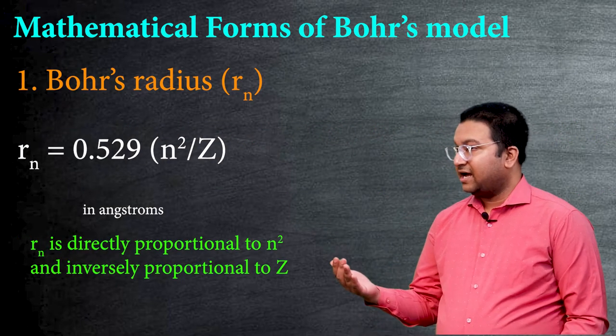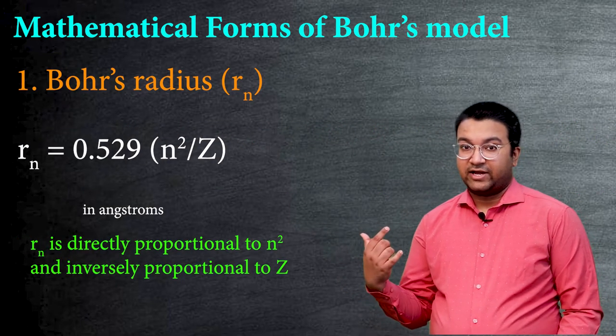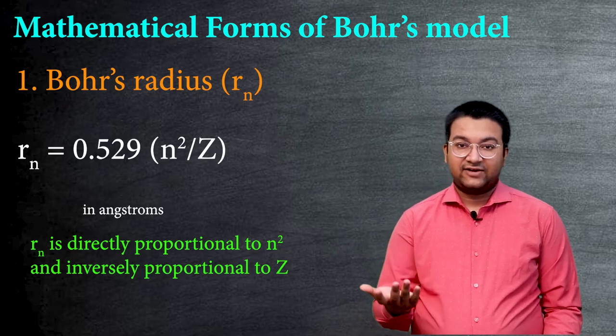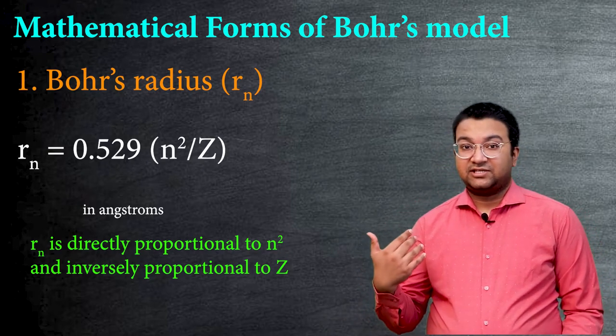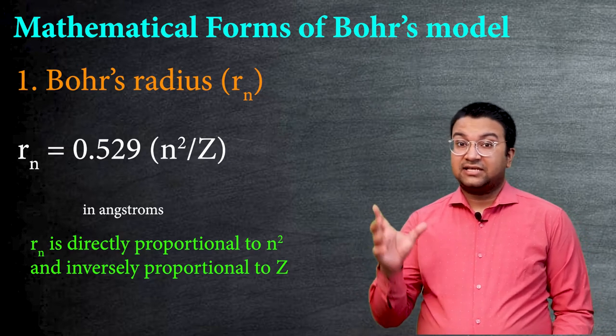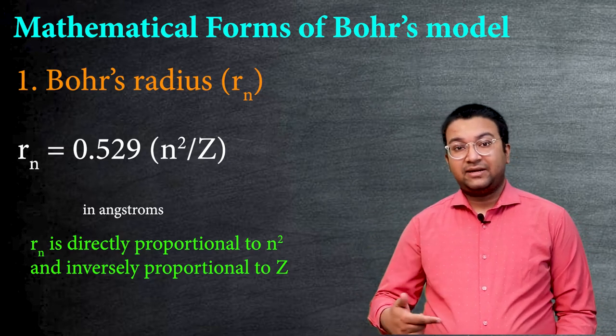In other words, we can also see that r becomes proportional to n². Which means as n increases, the r will also increase. And r will be inversely proportional to Z, which means if atomic number increases, the size of the radius of the same orbit decreases.